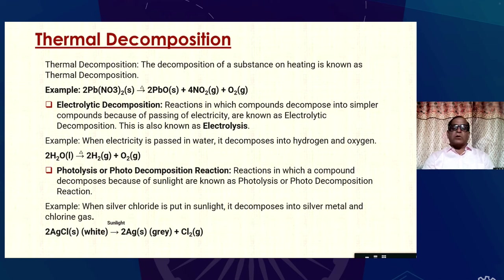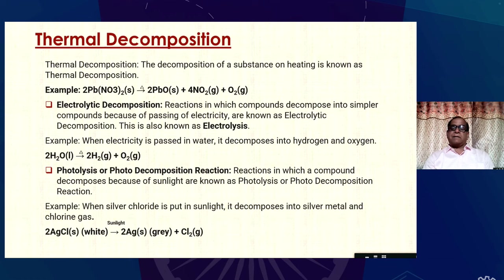The third type is photolysis or photodecomposition. Reactions in which a compound decomposes because of sunlight are known as photolysis or photodecomposition. For example, when silver chloride is exposed to sunlight, it decomposes into silver metal and chlorine gas — this is an example of photolysis. These are the three types of decomposition reactions: thermal decomposition, electrolytic decomposition, and photodecomposition.